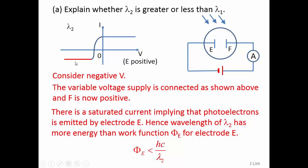implying that photoelectrons is emitted by electrode E. Hence, wavelength lambda 2 has more energy than work function for electrode E.